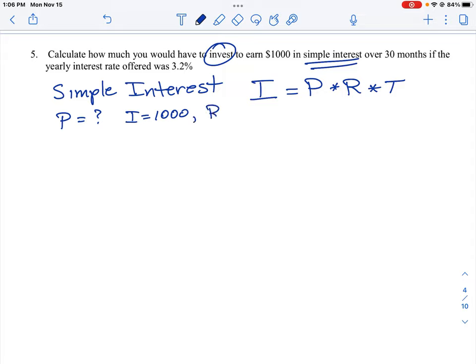We also know the interest rate is equal to 3.2%. Now we can't use 3.2% as is, so anytime you see a percent, you just drop the percent sign and divide by 100. So the interest rate is actually always a decimal and it's going to be 0.032.